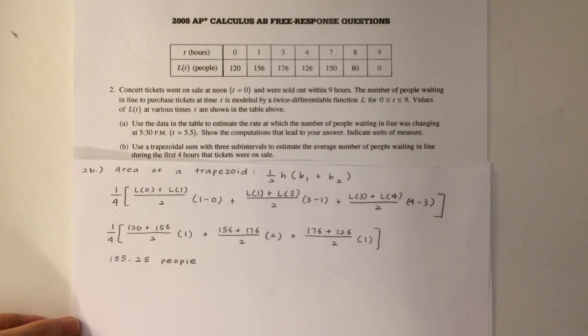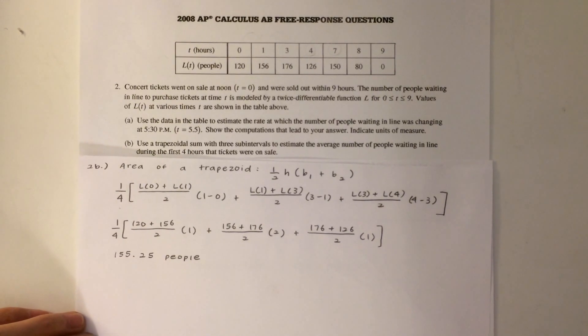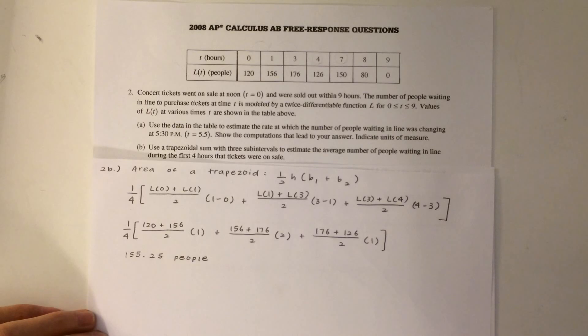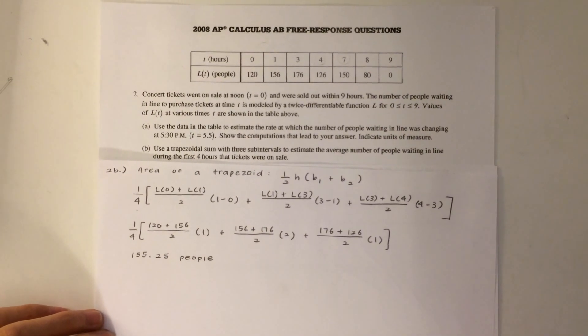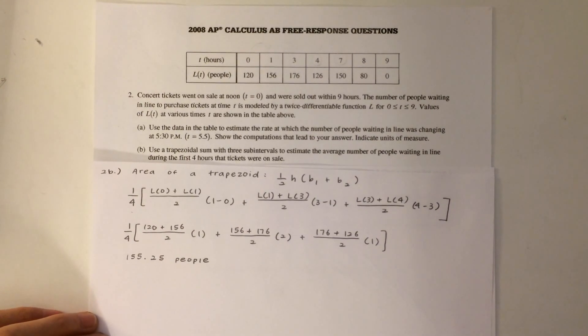for the first interval, which is between t equals 0 and 1, we do l of 0 plus l of 1 over 2 times the difference in the times, which is 1. Repeat these steps for the next two intervals and divide the sum by 4 to get 155.25 people.